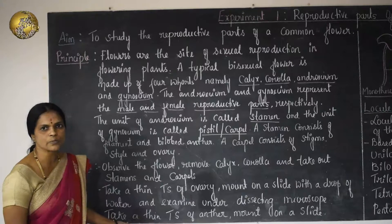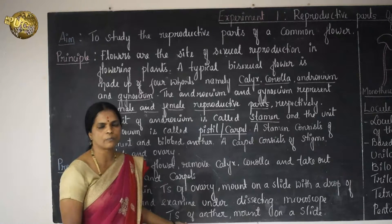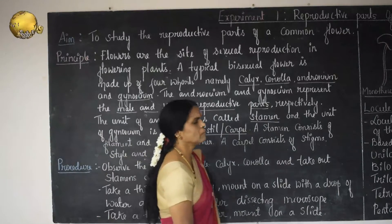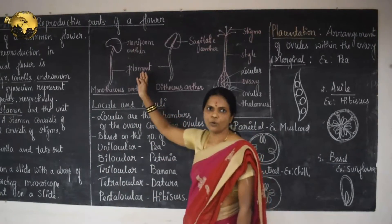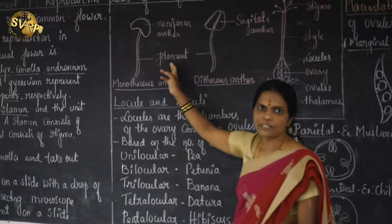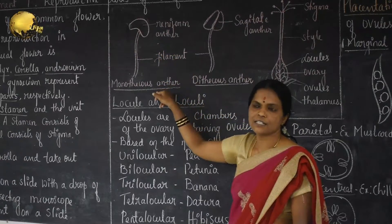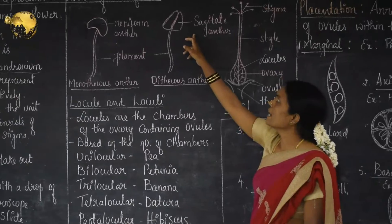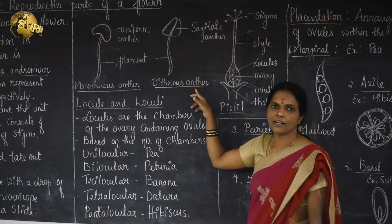Likewise, take a thin transverse section of the anther, mount on a slide with a drop of water, and examine under the dissecting microscope. When you observe the stamen under the microscope, the stamen consists of a long slender filament with reniform anther and is monothecous — as in the hibiscus stamen. The anther is bilobed, sagittate, and dithecous as in the Vinca stamen.